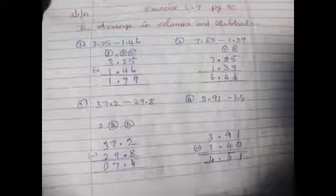Here we have 5 minus 6, so we borrow from the next place. So 15 minus 6 is 9. Then 11 minus 4 is 7, and cross the decimal value. 2 minus 1 is 1. So 3.25 minus 1.46 equals 1.79.